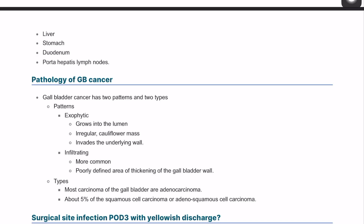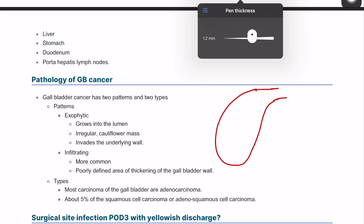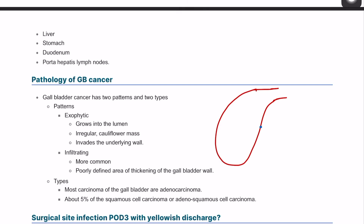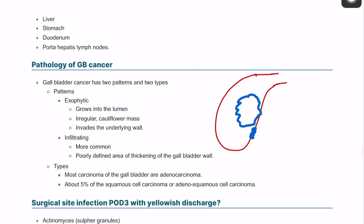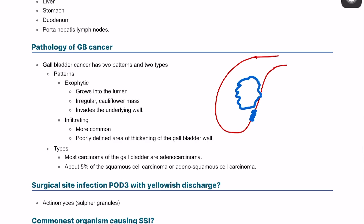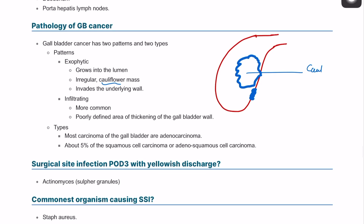We talked about the two growth patterns — exophytic and infiltrating. The exophytic type grows into the lumen and can be ulcerating, looking like a cauliflower. The infiltrating type intervenes with the wall rather than the lumen. In terms of histological types, most of the time it is adenocarcinoma; however, it could also be squamous cell carcinoma or adenosquamous cell carcinoma.